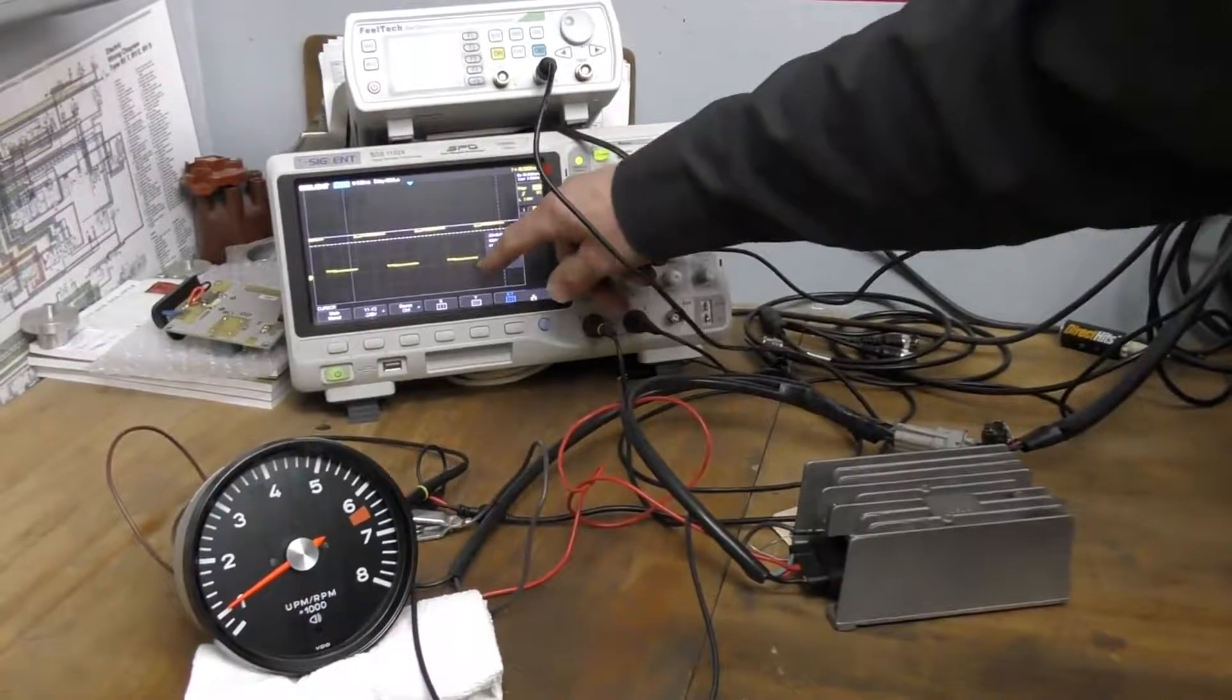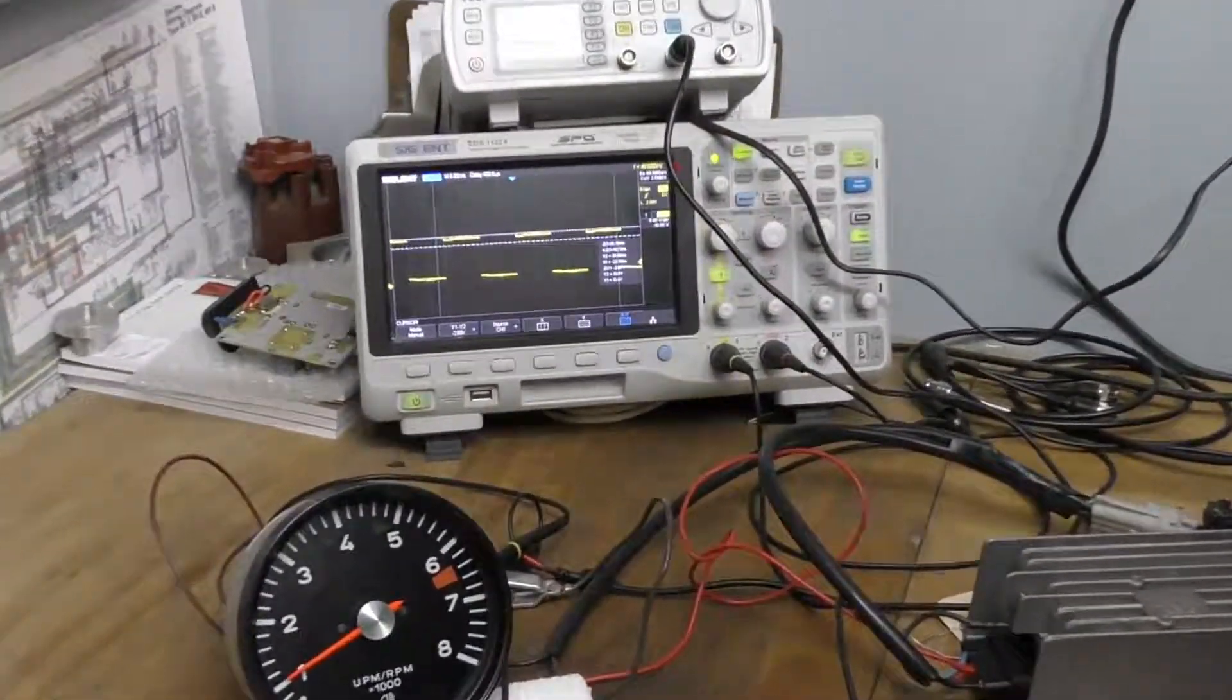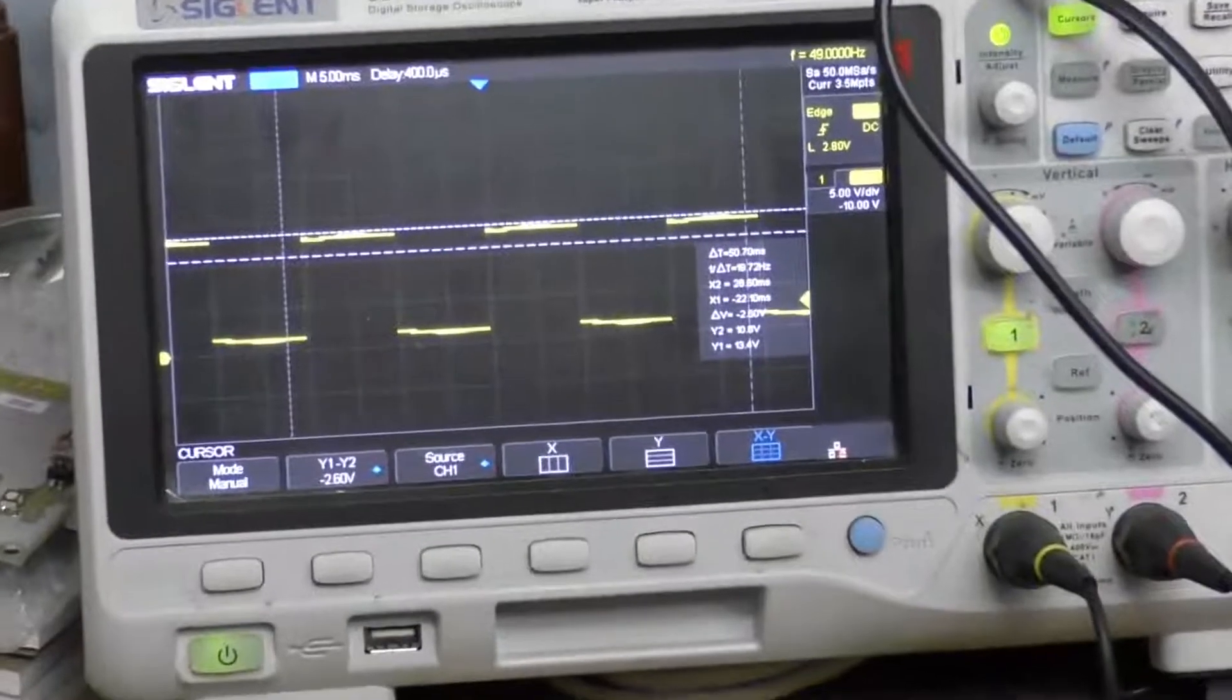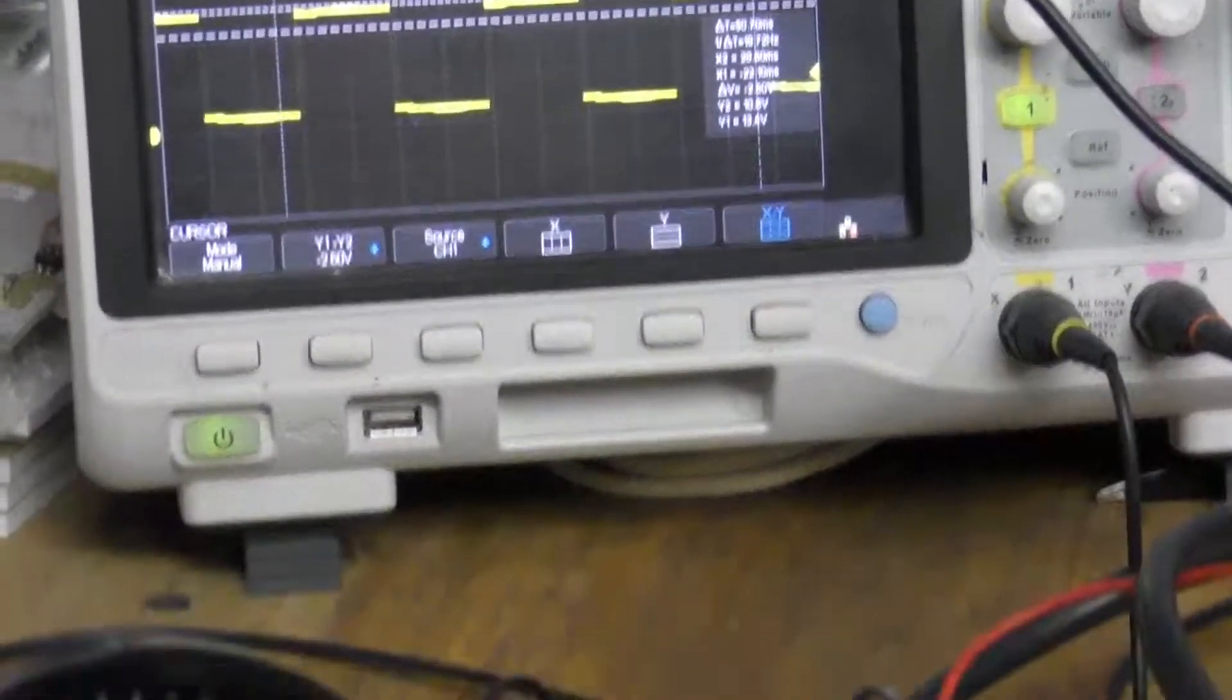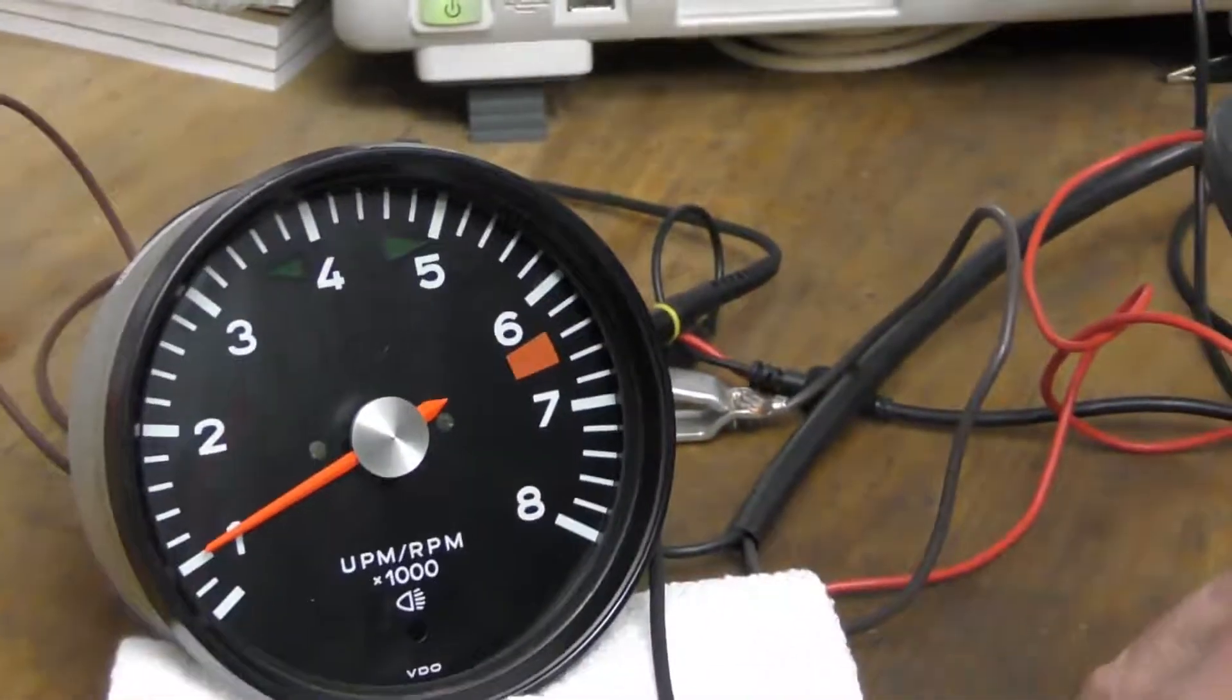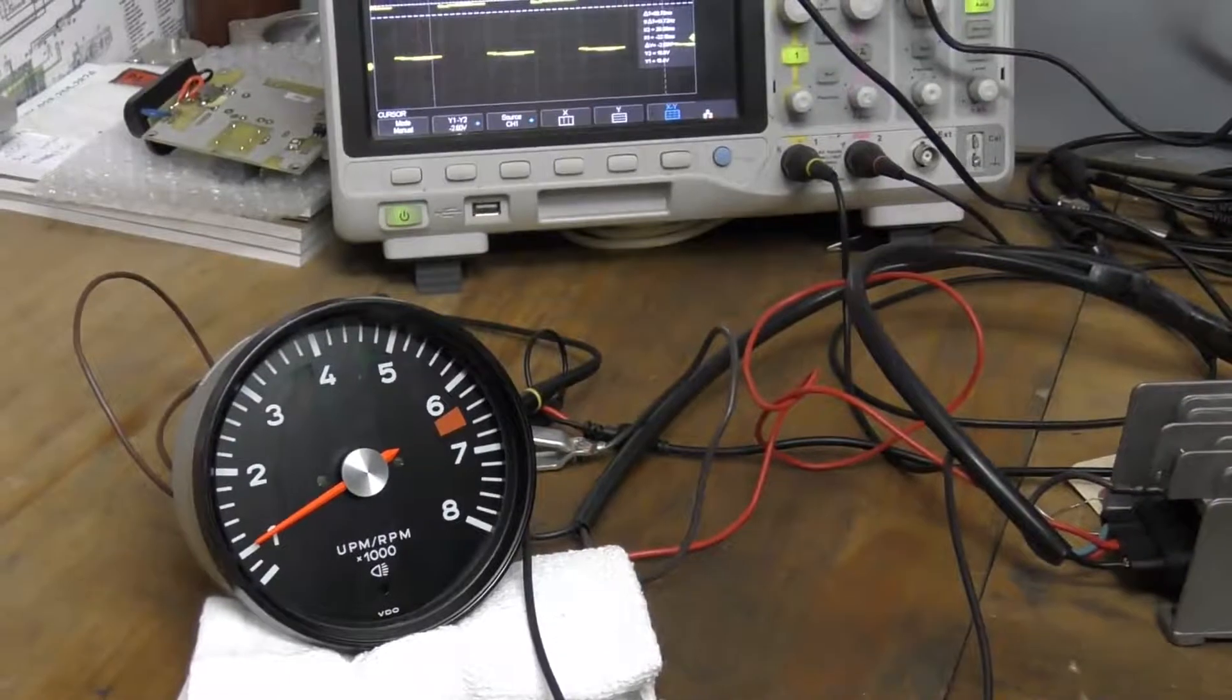We see on the oscilloscope we've got a nice clean square wave. This is what your point signal is going to look like coming out of your ignition distributor. We can also test a tachometer. I'm doing that at the same time. I can also test it individually without running a CDI box and we'll show you that in just a minute.